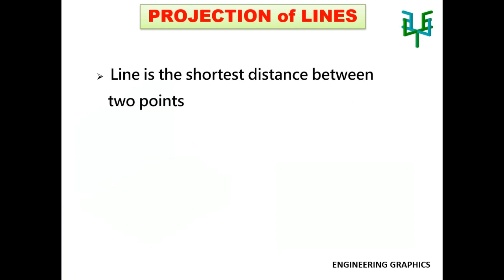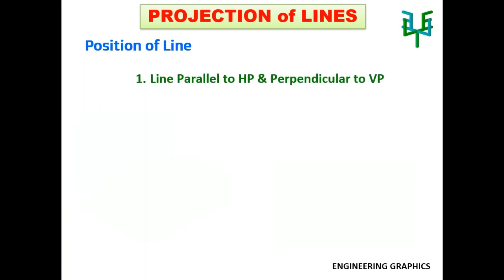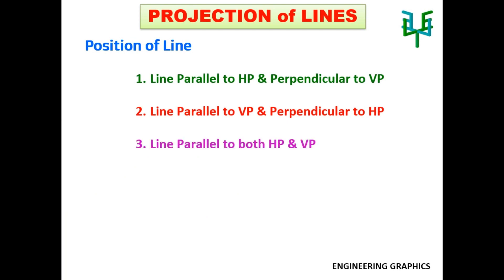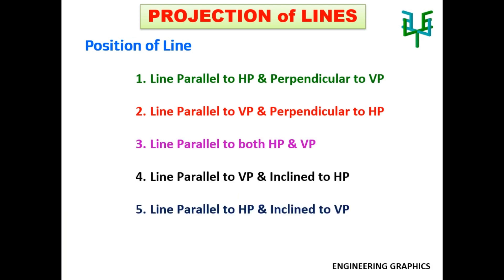The different positions of a line with respect to horizontal and vertical planes are: line parallel to HP and perpendicular to VP; line parallel to VP and perpendicular to HP; line parallel to both HP and VP; line parallel to VP and inclined to HP; line parallel to HP and inclined to VP; and line inclined to both HP and VP.